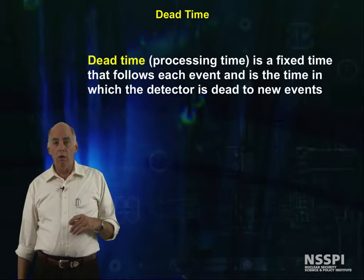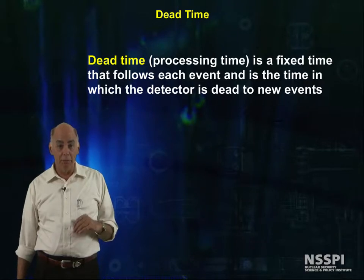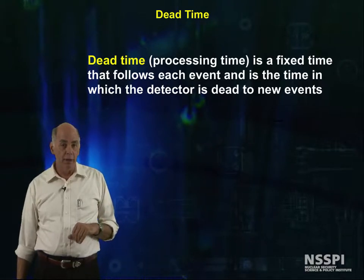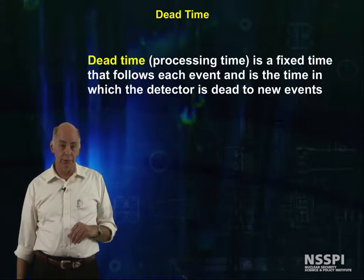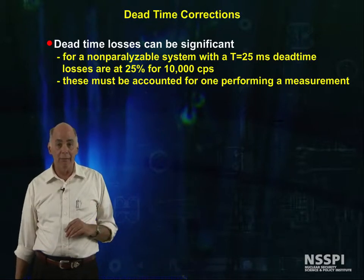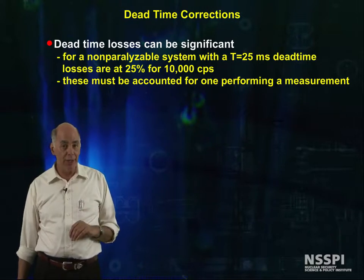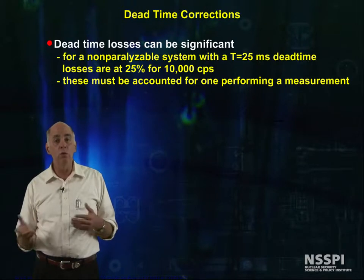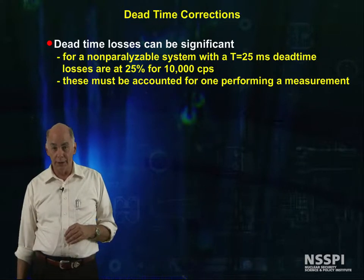Formally, what we called processing time above is actually known as dead time, because it represents the time that the detector is dead to incoming signals. These dead time losses can be significant — for a non-paralyzable system with a dead time of 25 microseconds, the dead time loss is 25% at 10,000 counts per second. Obviously, the results are even worse for paralyzable detectors.